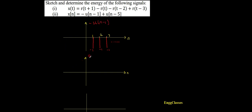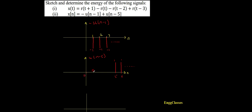The next part is sketching u of n minus 5. It is the shifted version of the unit step to the position of 5, so it starts at 5, 6, 7 and exists till infinity. Its amplitude is positive, with values of 1. For positions 0, 1, 2, 3, and 4, the samples are all 0.